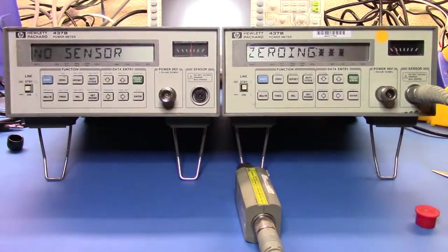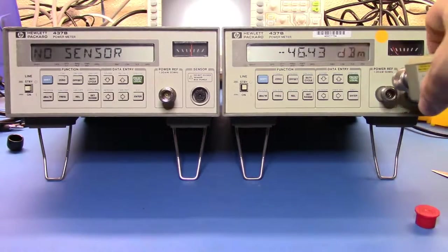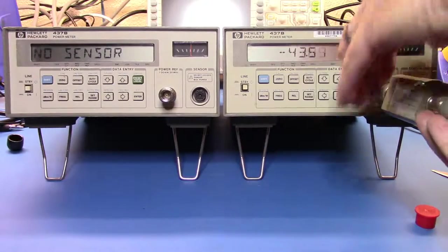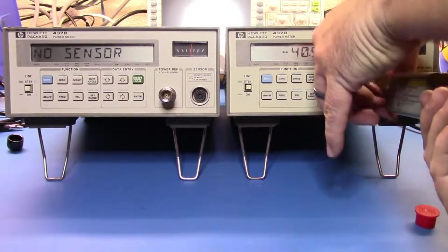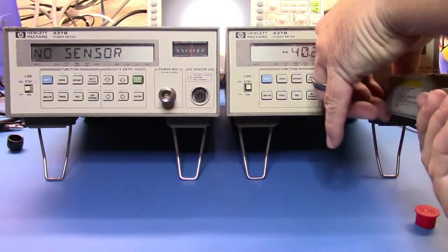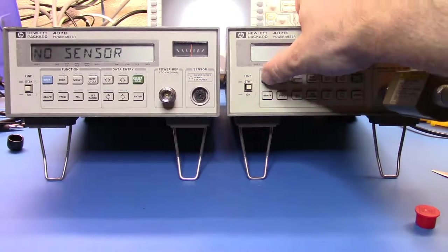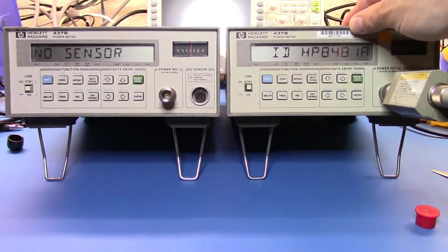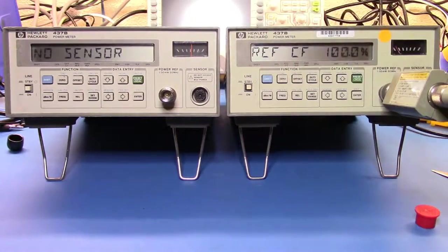And then what I'm going to do is zero that, then calibrate it against the reference, then we're going to take a measure of the reference over here. Okay, so there we go. Okay, so now I'm in. Let me make sure that I have the correct sensor set, 8481A, yep. And let's go and calibrate that.